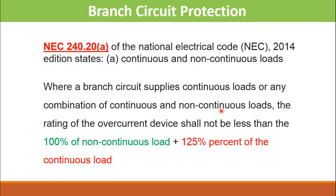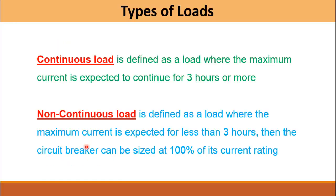NEC classifies the load into two types: continuous load and non-continuous load. In most videos and literature, the circuit breaker is sized at 125% of the total load. However, NEC states that for continuous loads the circuit breaker must be sized at 125%, whereas for non-continuous loads the circuit breaker can be sized at 100% of the total full load current.